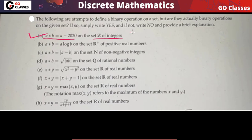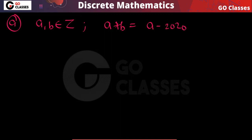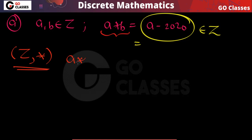Yes, this is a binary operation on the set of integers. If you take any two integers, then a star b equals a minus 2020. You can notice this is definitely an integer. So I can say that on the set of integers, this binary operation a star b equal to a minus 2020 is closed.